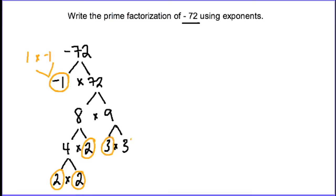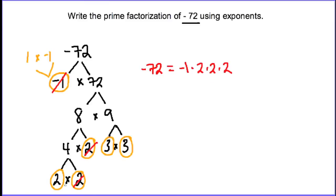The 9 breaks down into 3 times 3, and we know that 3 is a prime number as well. Putting all these together, negative 72 equals negative 1 times 2 times 2 times 2 times 2 times 3 times 3.